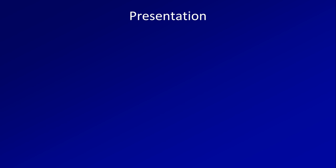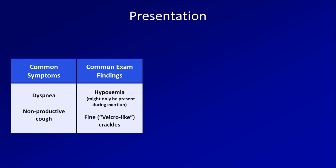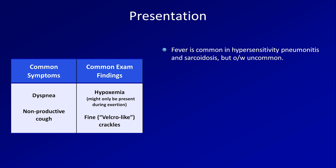Due to their diverse nature, ILDs also have a diverse presentation regarding age, sex, and racial predominance, relationship to smoking history, family history, acuity of onset, and radiographic appearance. However, there are some commonalities. The symptoms common to all ILDs are dyspnea and a non-productive cough. Common exam findings include hypoxemia — which might only be present during exertion — and fine crackles, sometimes described as dry or velcro-like, in contrast to the wet coarse crackles of bronchiectasis and bacterial pneumonia. Fever is common in hypersensitivity pneumonitis and sarcoidosis, but is otherwise uncommon.